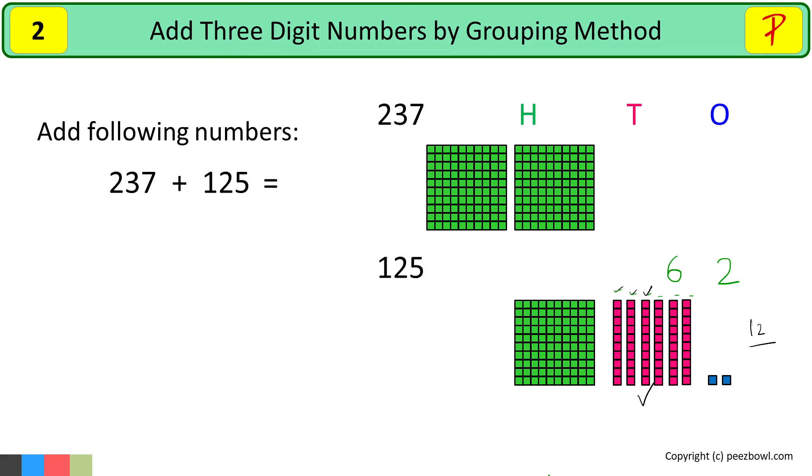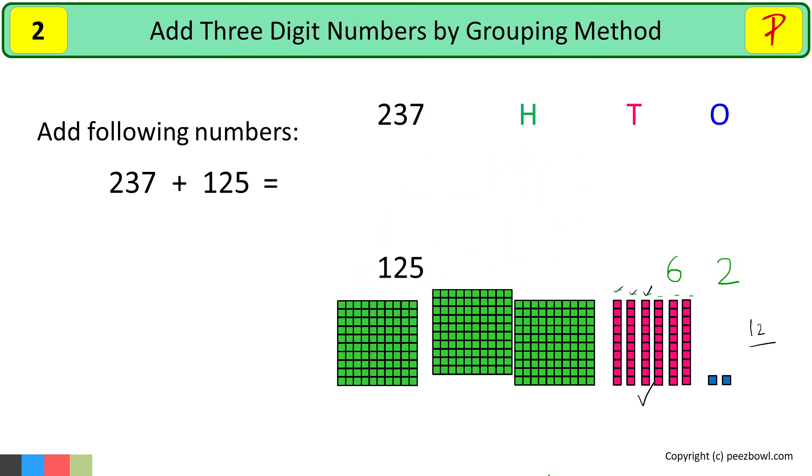Now we will move two hundreds from 237 to 125. So at the hundreds place, we have three hundreds.